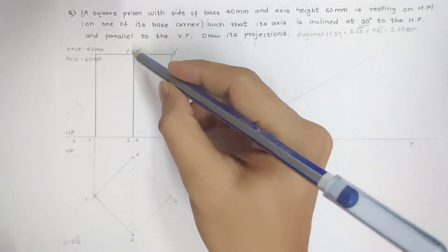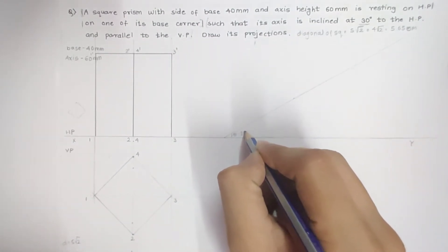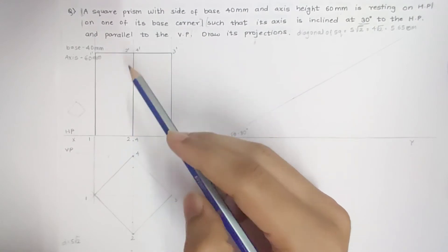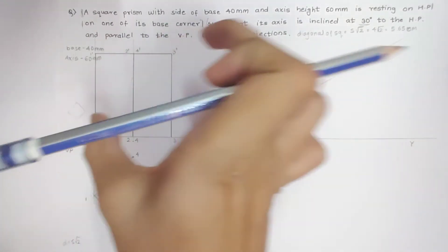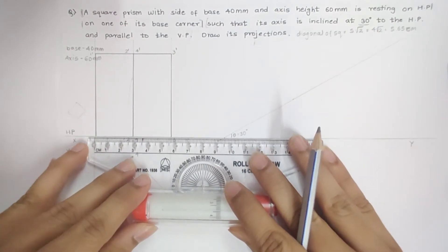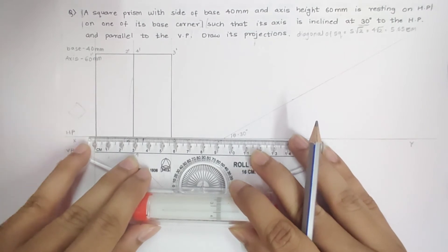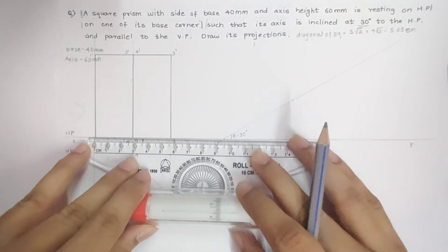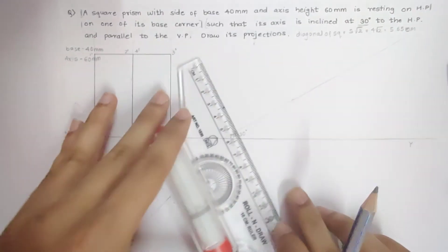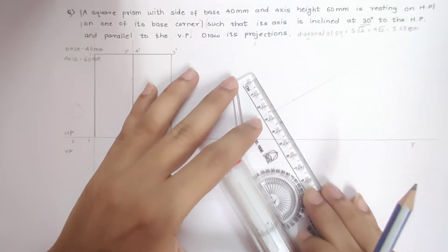Now this axis is 30 degrees inclined to HP. I have drawn the 30 degree angle with this axis, so I have to place this cube over here. I will mark the points first. This is my base, that is 5.6 and 2.8, so I will make sure 2.8 and 5.6 are over here.